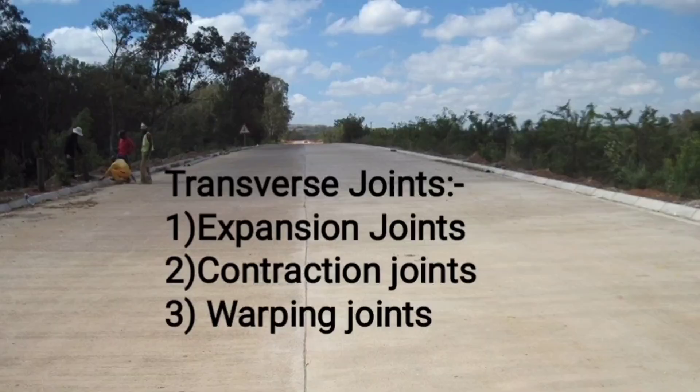Now let us come to another type of joint — transverse joints. Transverse joints are placed in the transverse direction to the longitudinal section of the road. Transverse joints are further classified into three types: the first is the expansion joint, the second is the contraction joint, and the third is the warping joint. The warping joint is largely a theoretical concept.